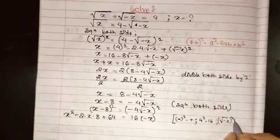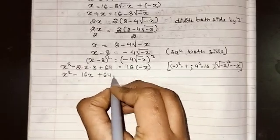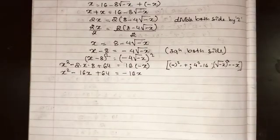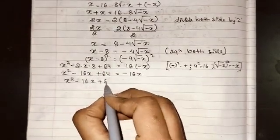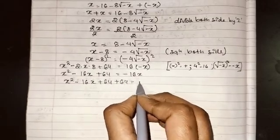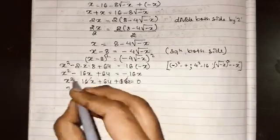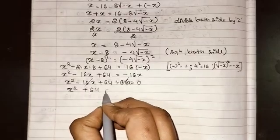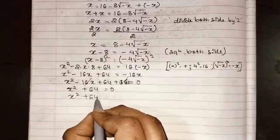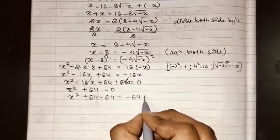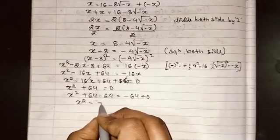So we have x² - 16x + 64 = -16x. Bringing -16x to the left side, it becomes +16x. The -16x and +16x cancel out, leaving x² + 64 = 0. Subtracting 64 from both sides, we get x² = -64.